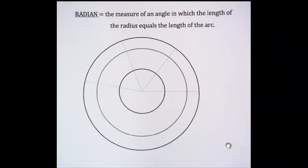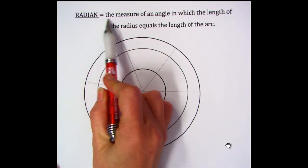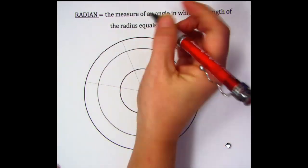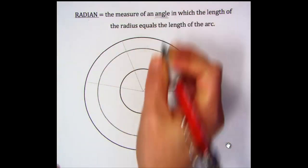Before we continue, let's talk more about radians. Remember, the definition of a radian is the measure of an angle in which the length of the radius equals the length of the arc.